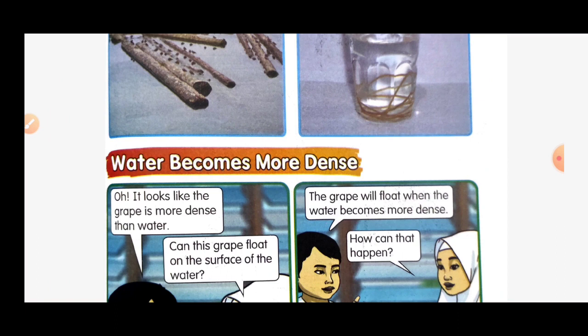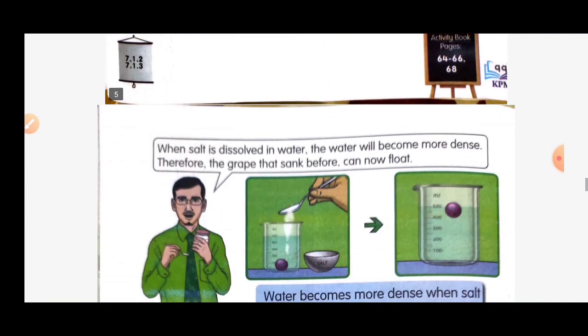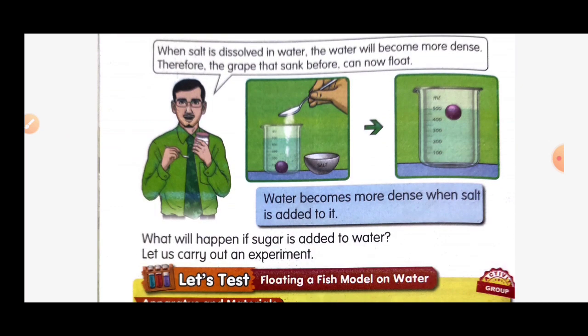Let's move to another subtopic: water becomes more dense. It looks like the grape is more dense than water — can this grape float on the surface of water? The grape will float when the water becomes more dense. When salt is dissolved in water, the water becomes more dense. Therefore, the grape that sank before can now float. The water becomes more dense when salt is added to it.